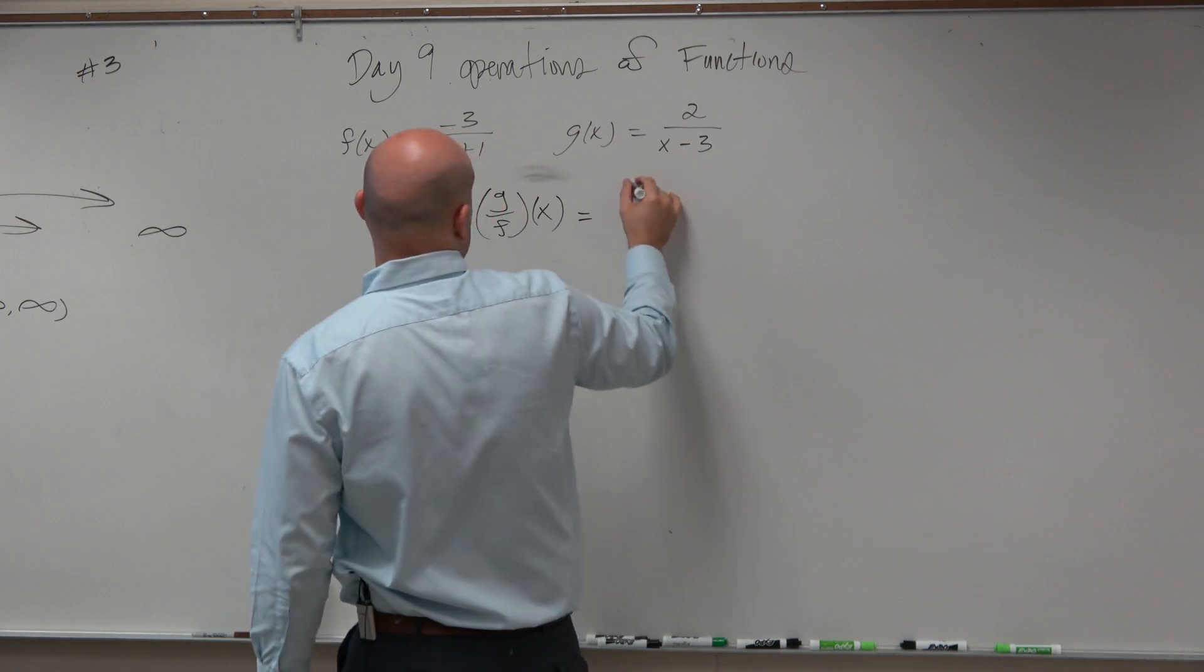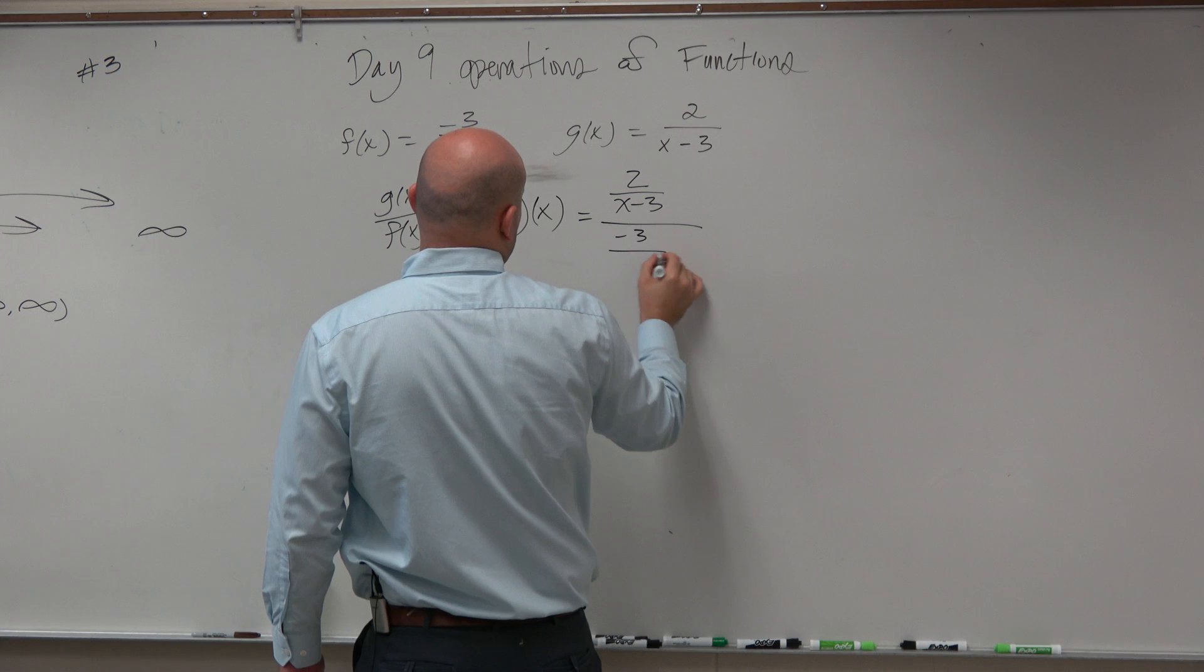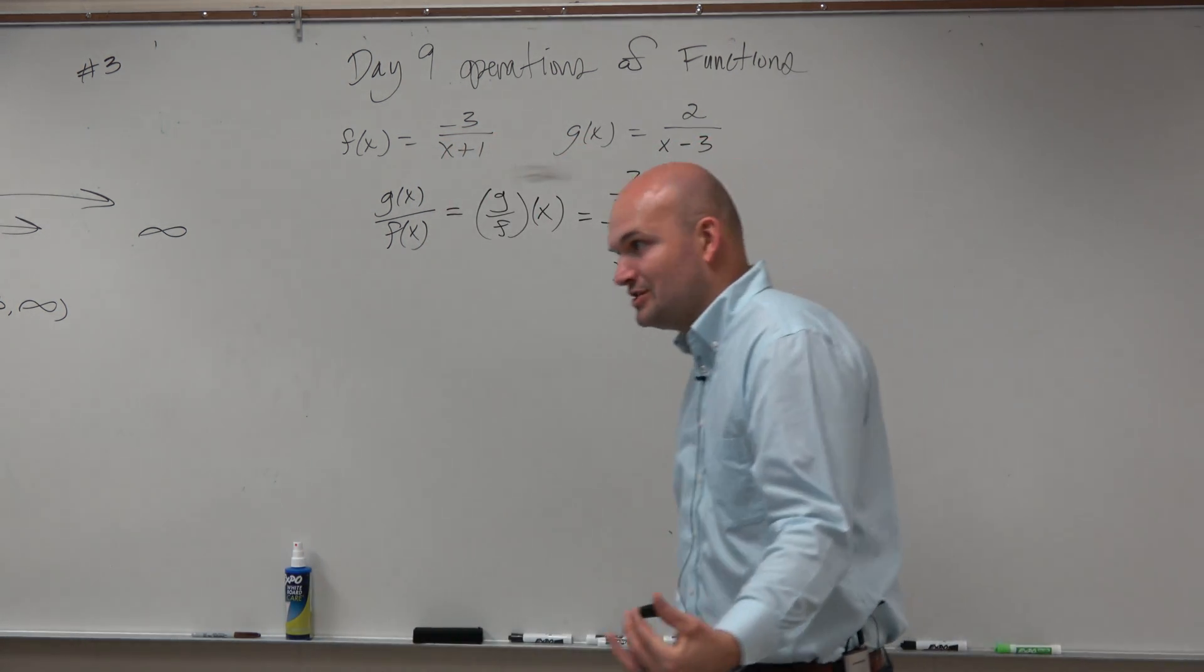So anyways, let's take g of x, so that's going to be 2 over x minus 3, all over negative 3 over x plus 1. So you're taking a fraction, dividing it by a fraction.